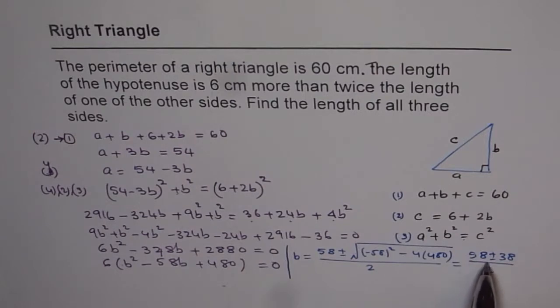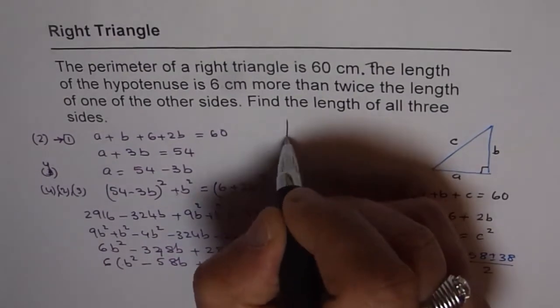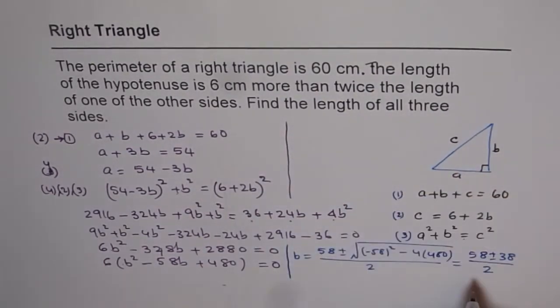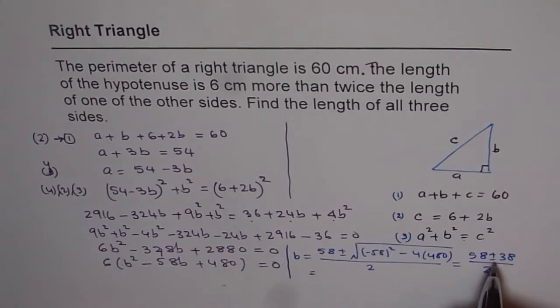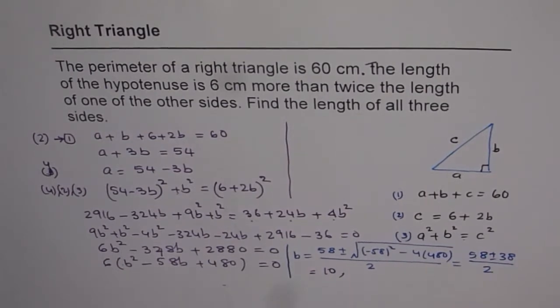For a triangle we can only take positive values. One is 58 minus 38 which is 20, and 20 divided by 2 is 10. So one value is b equals 10. Second is 58 plus 38, we get 96 divided by 2 and that gives us 48.